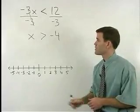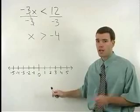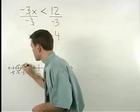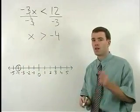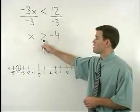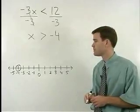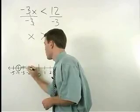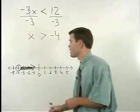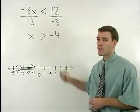Our next task is to graph x is greater than negative 4 on a number line. To do that, we start with an open dot at negative 4. The reason we use an open dot at negative 4 is that x is greater than negative 4 but it is not equal to negative 4. Next, we draw an arrow going to the right on our number line to represent all numbers greater than negative 4. Finally.